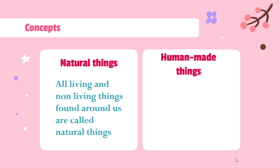Living things such as birds, animals, insects, human beings — all these are living things, so they are natural things. Non-living things such as mountains, sun, moon — all these are non-living things, but they are natural things. They are made by God, so they are called as natural things.